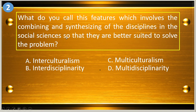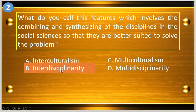Question number two: what do you call these features which involves the combining and synthesizing of the disciplines in the social sciences so that they are better suited to solve the problem? A, interculturalism; B, interdisciplinarity; C, multiculturalism; and D, multidisciplinarity. The answer is letter B, interdisciplinarity.